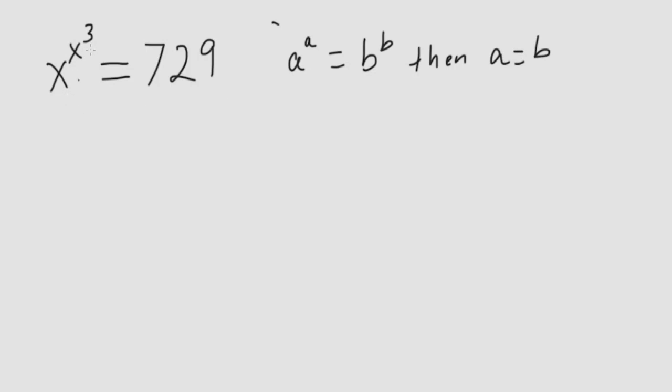We have x to the x cubed, so it's not exactly a to the a. So we need to change this to a to the a. To do that, we rewrite it and raise it to the power that you already have, which is 3. Once you do it to one side, you need to do it to the other side, so 729 cubed.